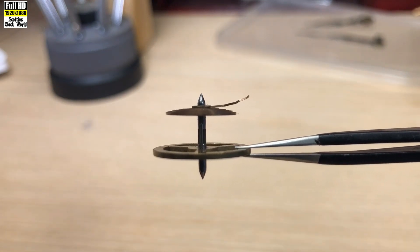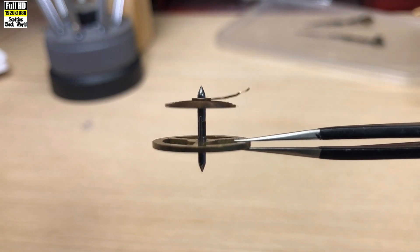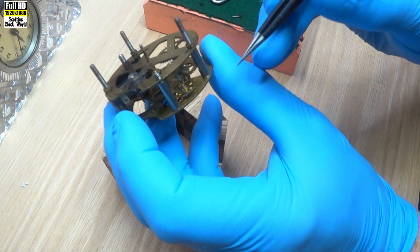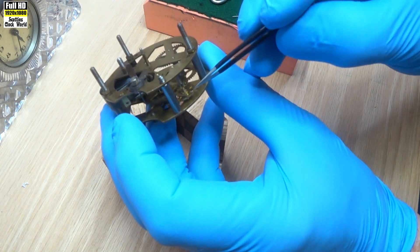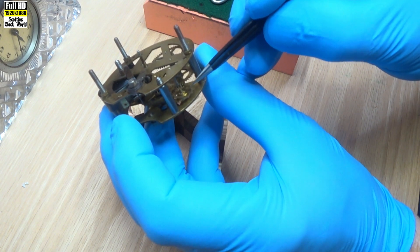That's what a hairspring should look like. The little bit that's up at the end gets attached to the movement. If we have a look here, you can see the escape wheel, that piece there.